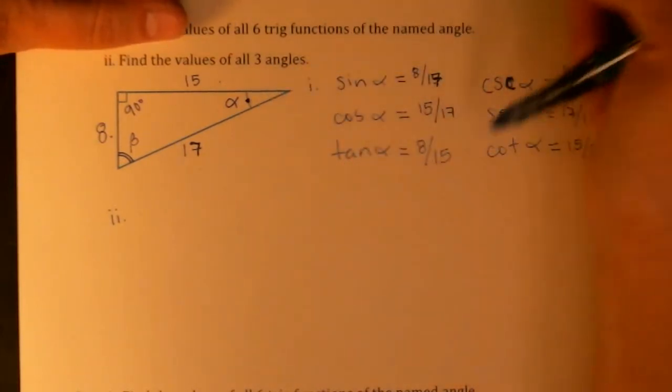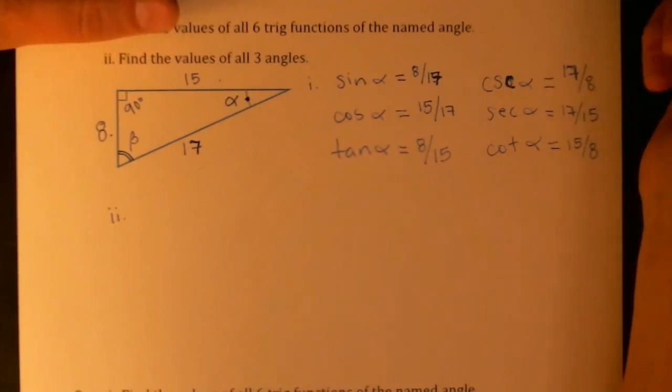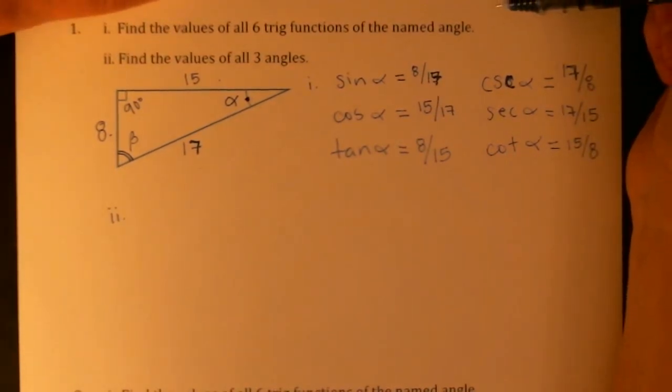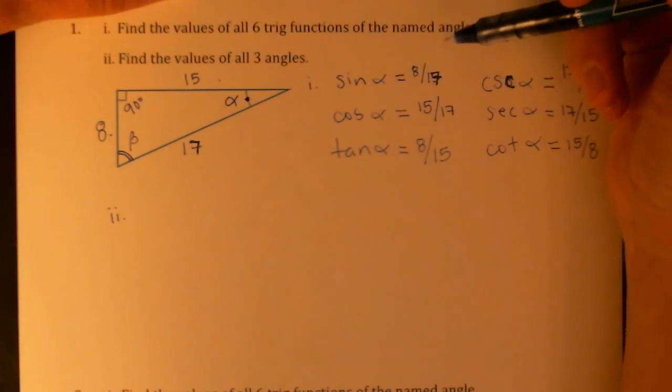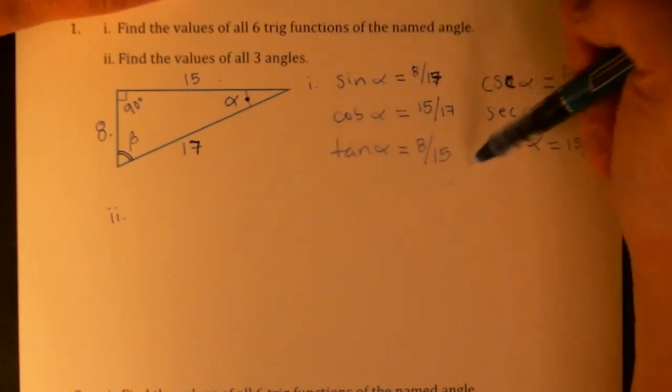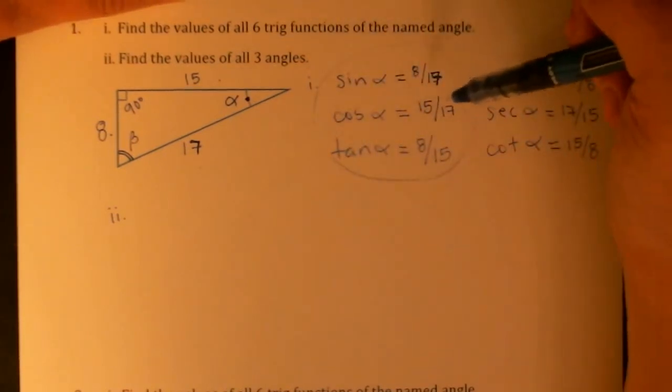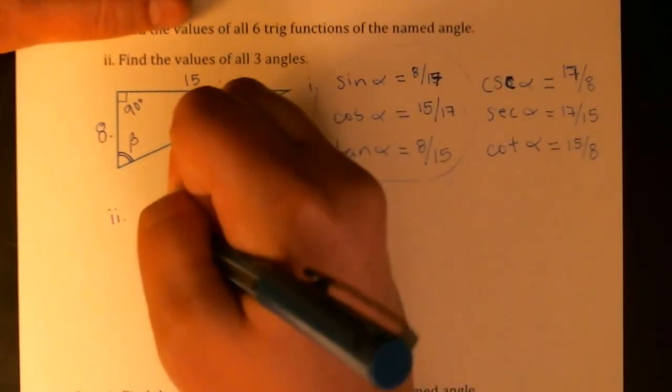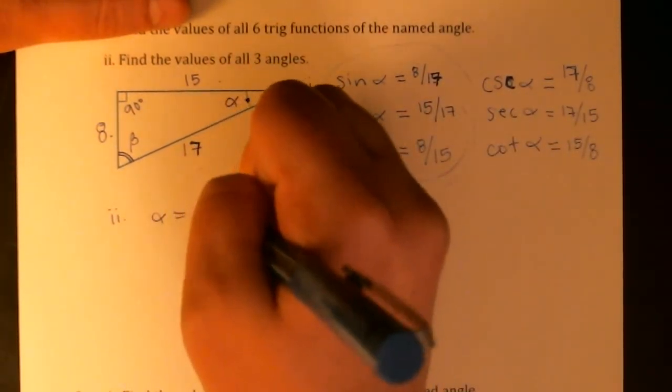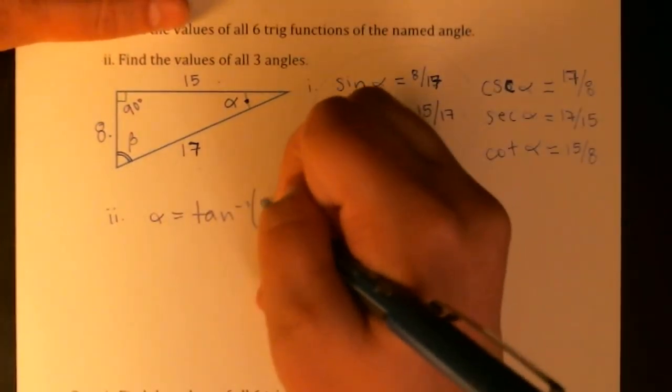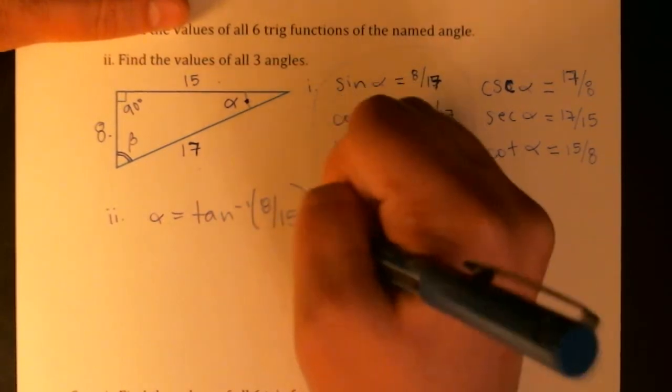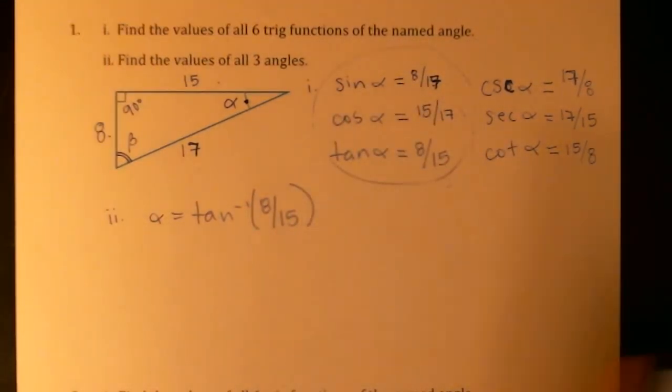Alpha, I know a ton about the values of the trig functions. If I want to find the value of alpha, I just need to use an inverse trig function. So pick your favorite, it doesn't matter, any of these first three would be great. I'm going to use the bottom one and say that alpha has to equal the inverse tangent of 8 fifteenths. And you can ask your calculator for that.